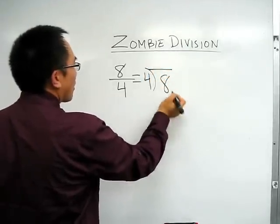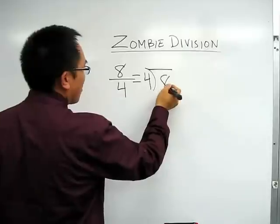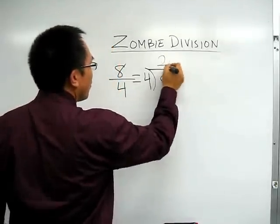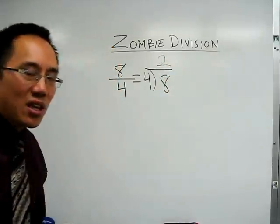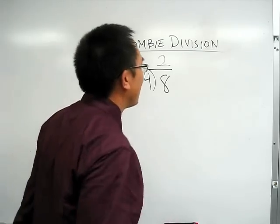So four, we got four zombies, eight people. Eight divided by four zombies, eight people divided by four zombies equals two people per zombie. What a healthy, fulfilling meal for the four zombies there.